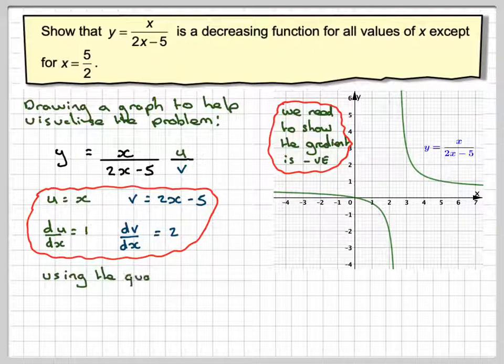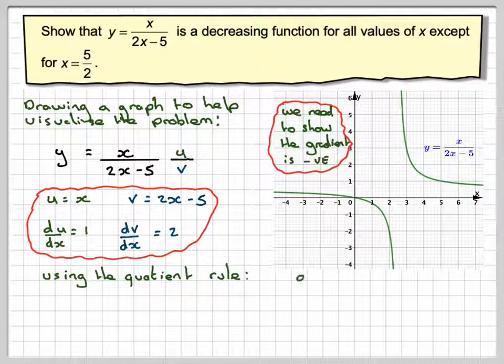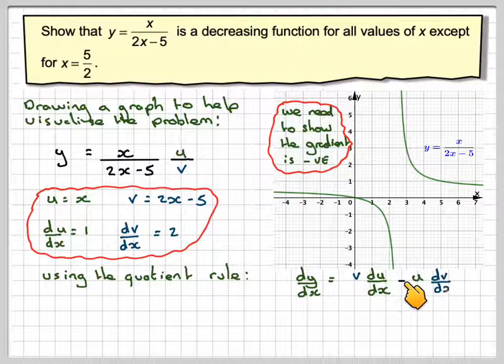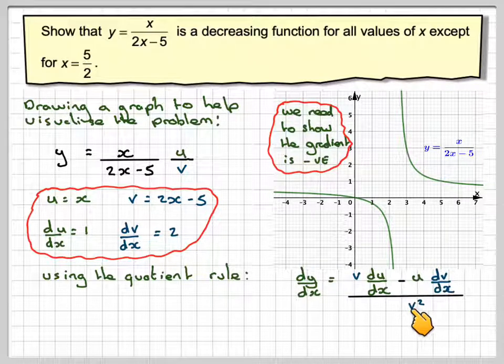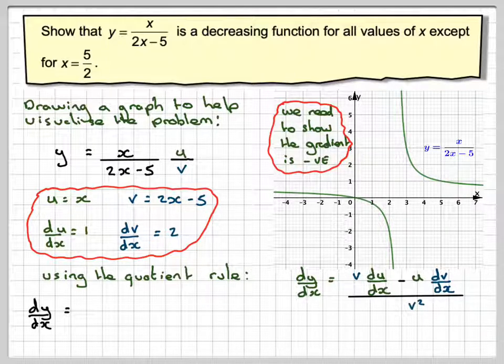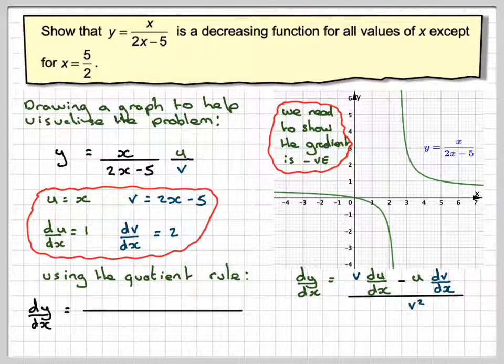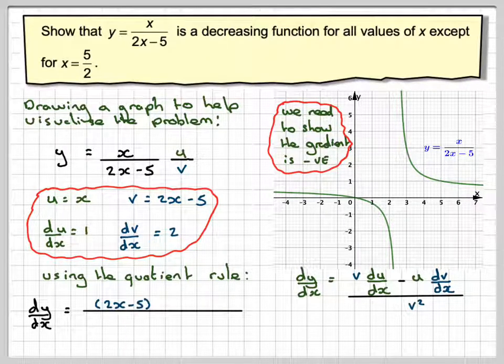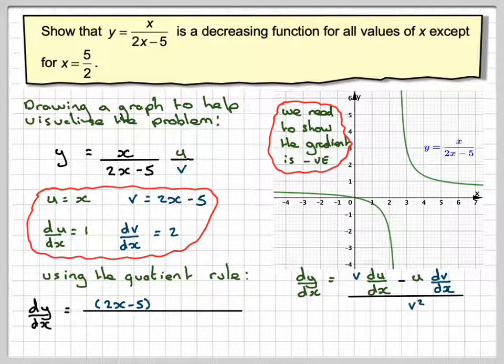So using the quotient rule, the quotient rule says dy by dx is v du by dx minus u dv by dx over v squared. So substituting in these values we've got v which is 2x minus 5 in brackets times du by dx which is 1...